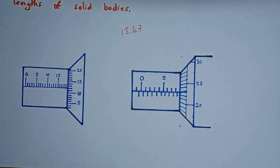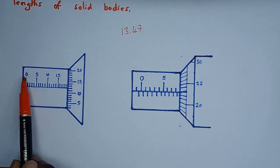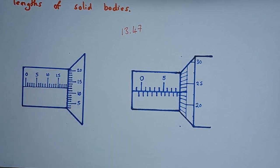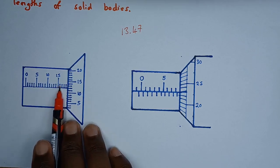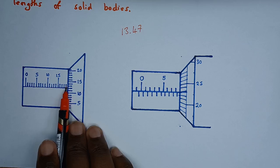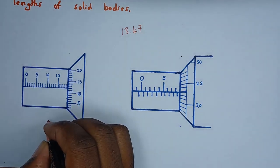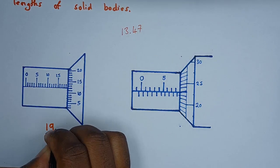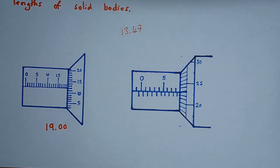On the main scale we have markings going 0, 5, 10, 15. If this is 15 then counting further: 16, 17, 18, 19. The last mark we have here is 19, so on the main scale the reading is 19.0.